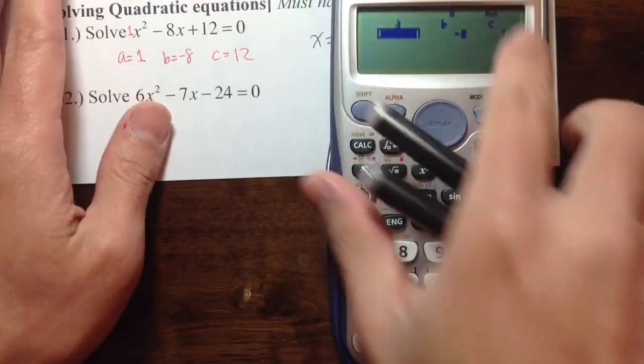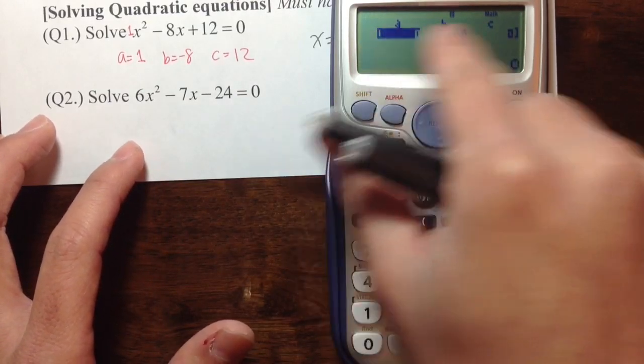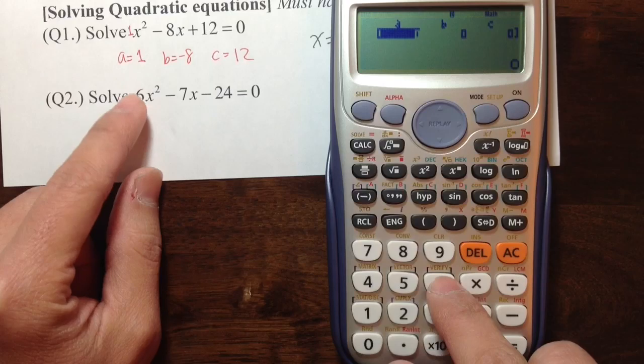Try another one. Notice that I just press the on key and then press the all clear. We can clear all that. For this one, the a is 6.